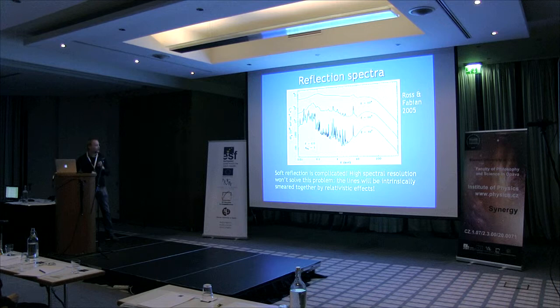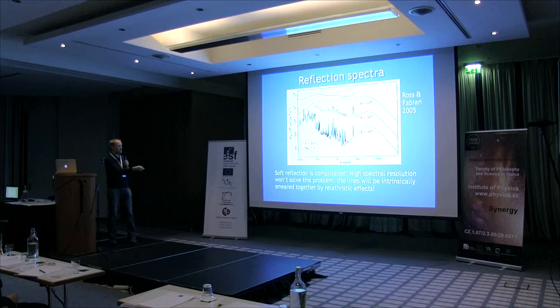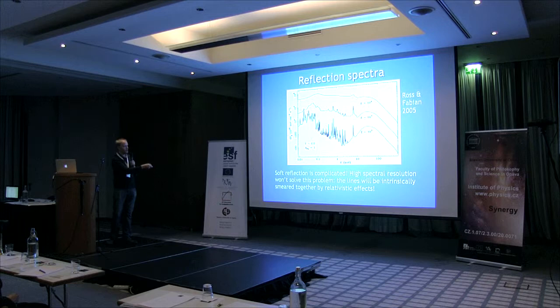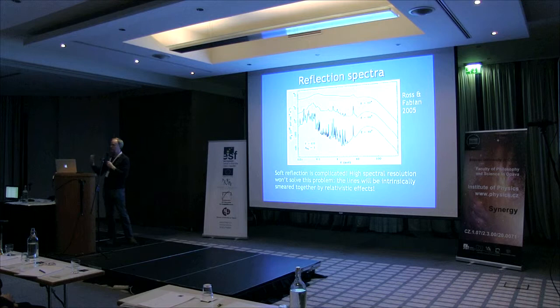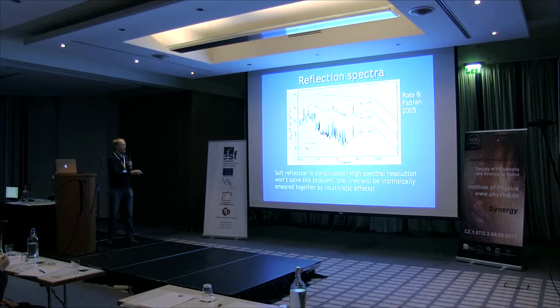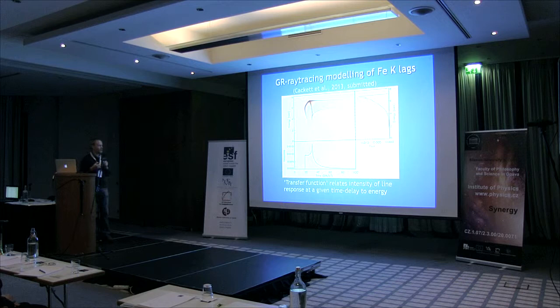One possible explanation for this is just that the reflection spectra themselves are much more complicated in the soft band. This is one of the classic examples from Watson-Fabian 2005 - when you look at typical ionisation states, if you look at low energies, the soft lag is essentially being contributed to by a whole bunch of lines, so it's very dependent on the ionisation state and the ionisation structure of the disk. Whereas the iron K line is much cleaner - it's there on its own. And if you imagine smearing this by relativistic effects, all these soft lines are going to be smeared together, whereas the iron K line will still remain fairly clean. Even high resolution won't really solve this problem, because everything's going to be smeared together anyway.